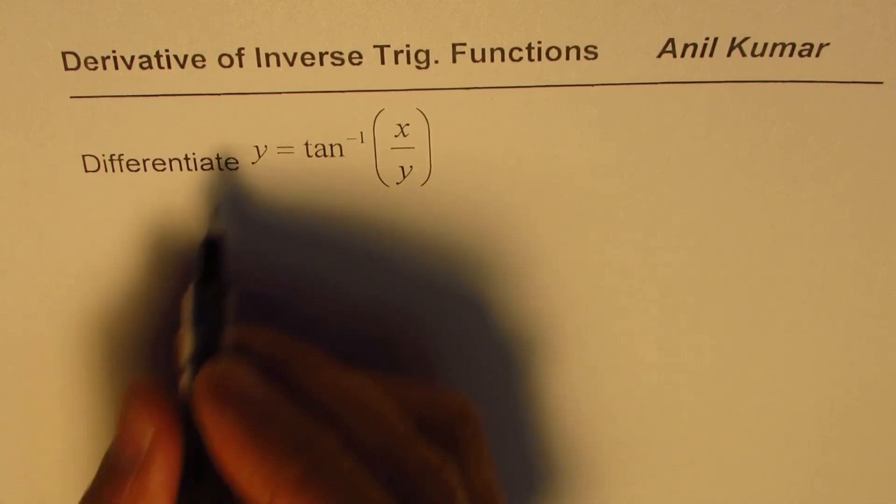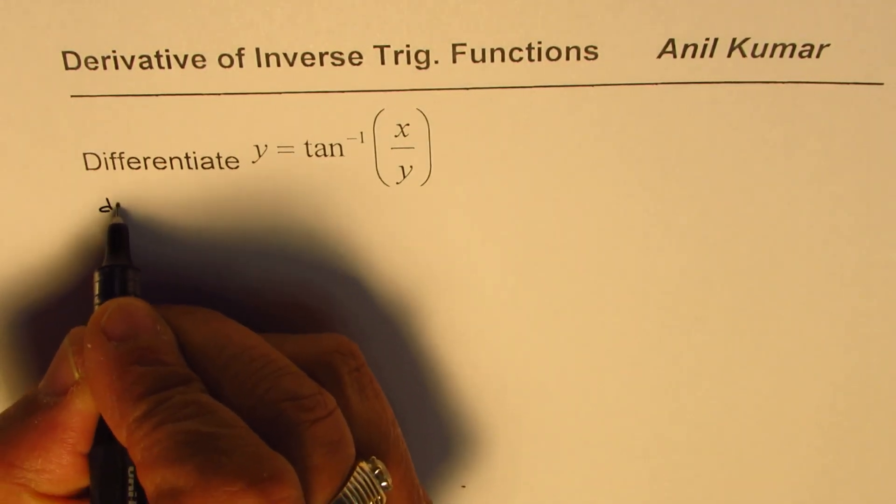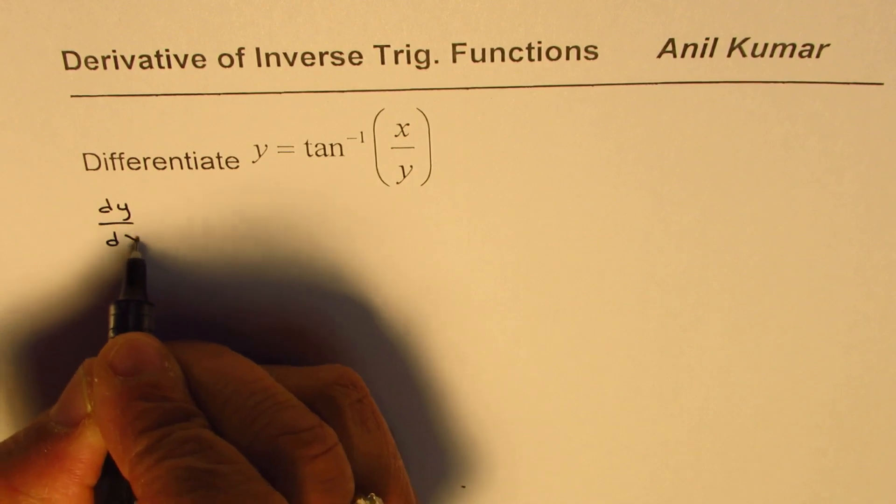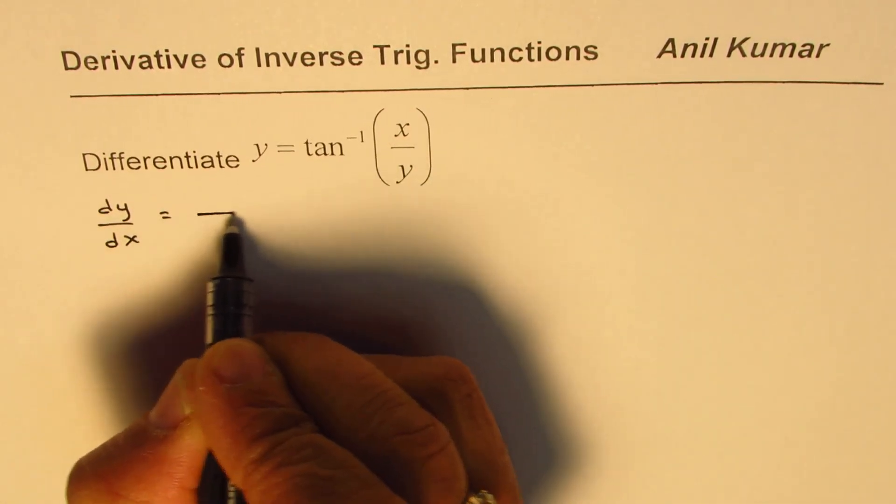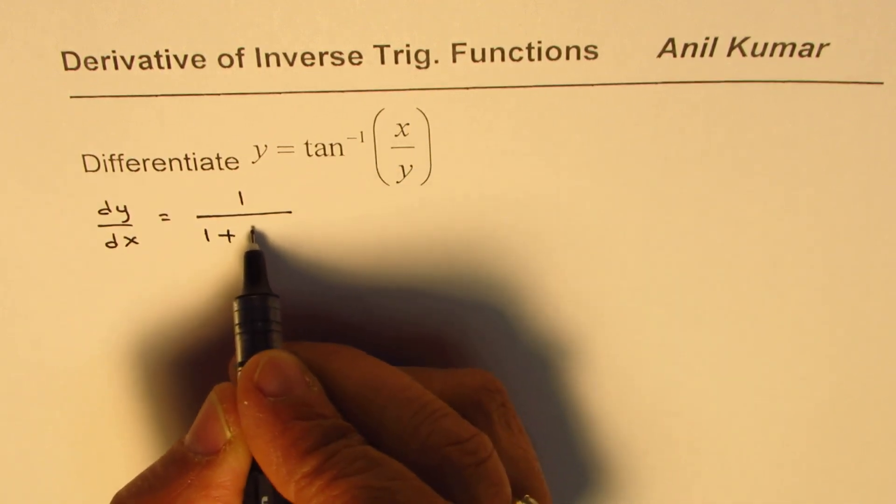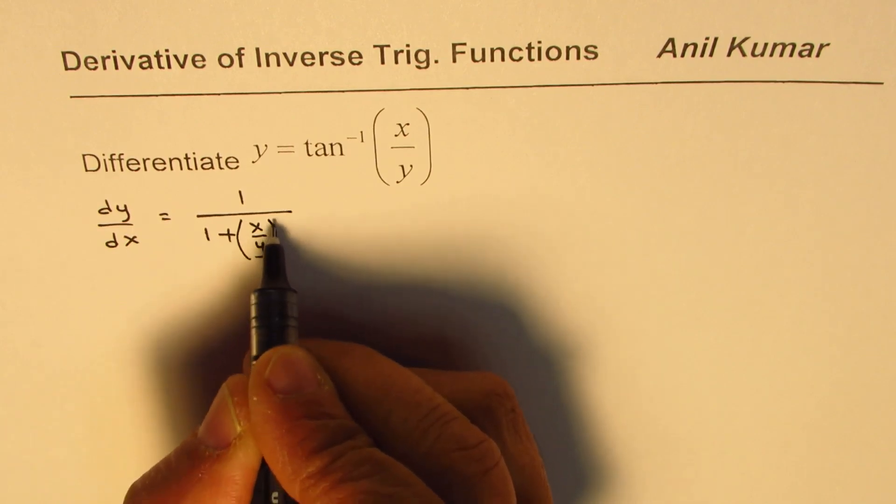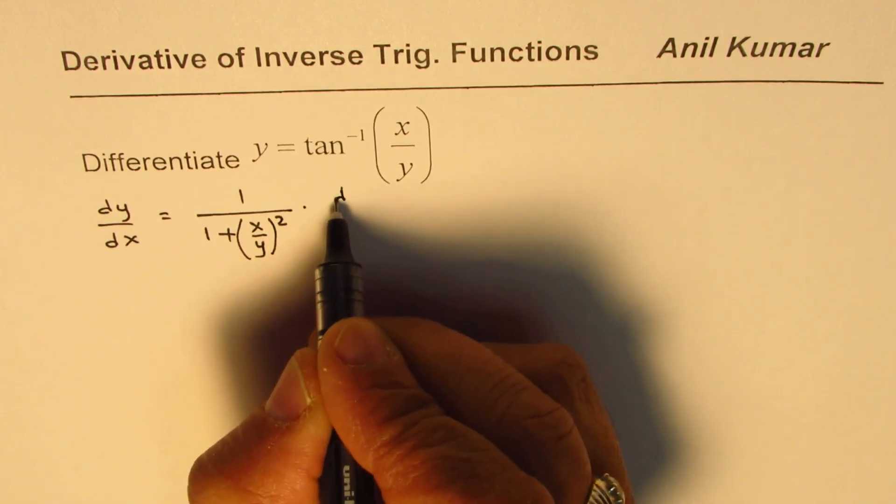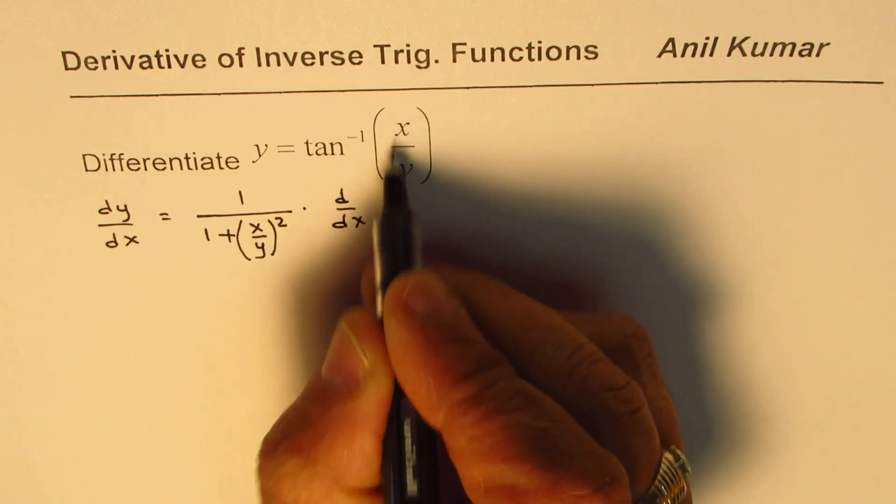Now dy/dx will be equal to 1 over 1 plus x squared, which is in this case x over y whole squared, times d/dx of the inside function which is x over y.